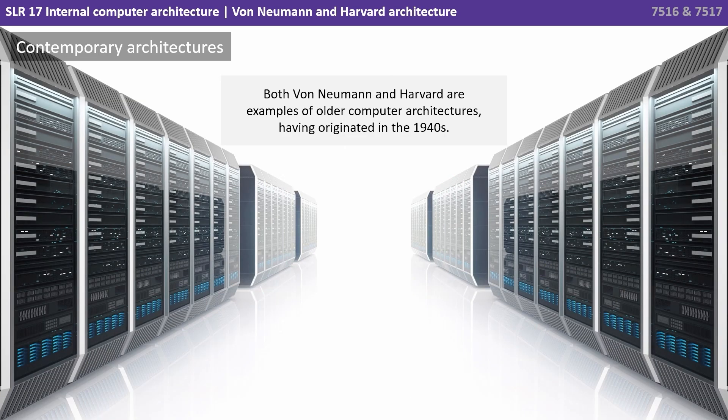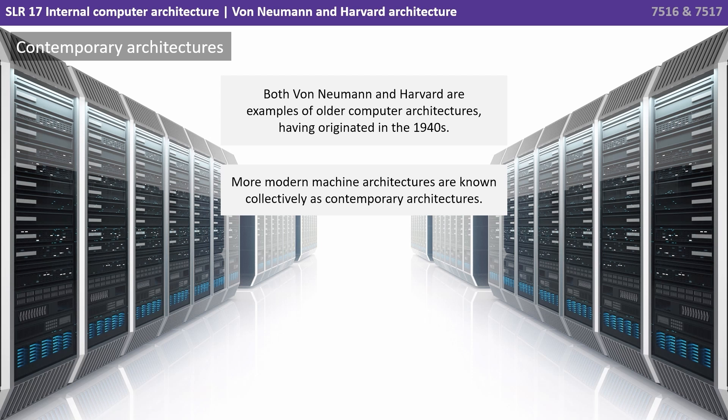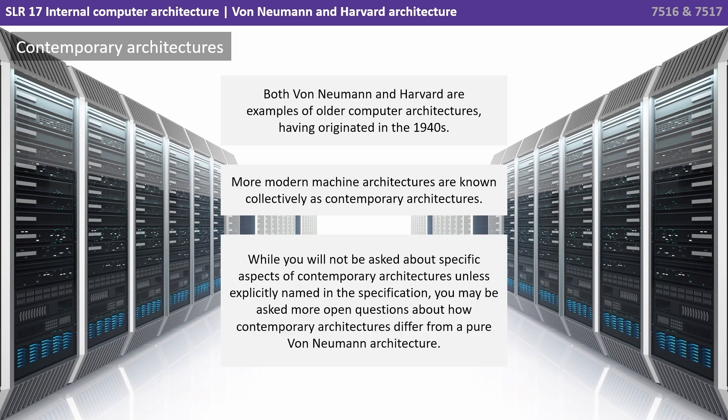Let's also briefly look at what we collectively call contemporary architectures. Both von Neumann and Harvard are examples of older computer architectures, having originated in the 1940s. More modern machine architectures are known collectively as contemporary architectures. While you're not going to be asked about specific aspects of contemporary architectures unless explicitly named in the specification, you may be asked more open questions about how contemporary architectures differ from a pure von Neumann one.